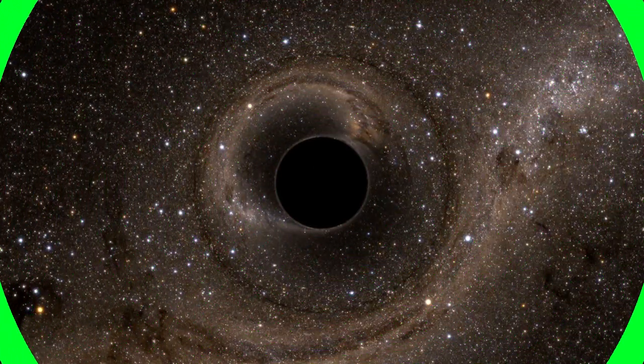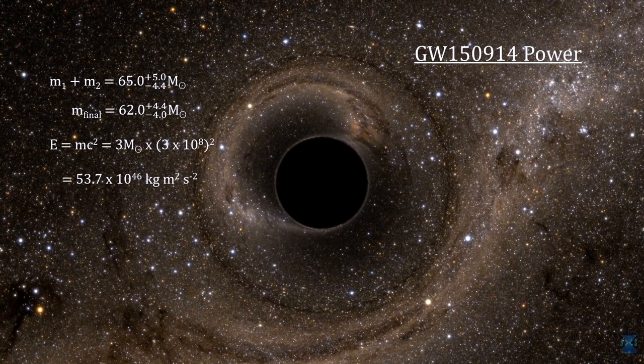Modeling the final ringdown shows that the mass of the resulting Kerr black hole is around 62 solar masses. That's three solar masses less than the sum of the masses of the two inspiraling black holes. This mass was converted to the radiated gravitational energy.